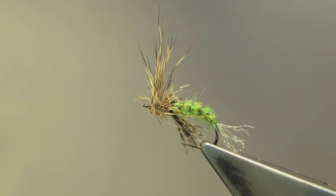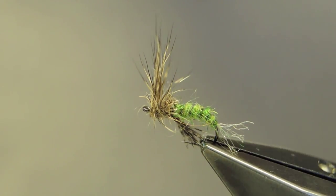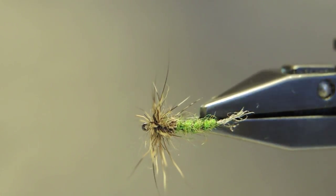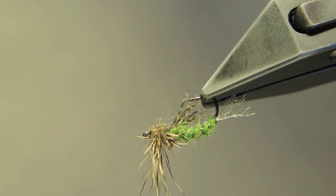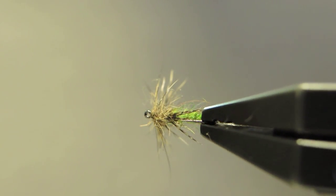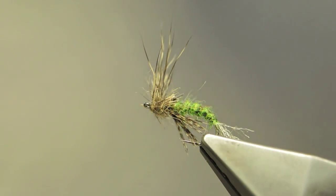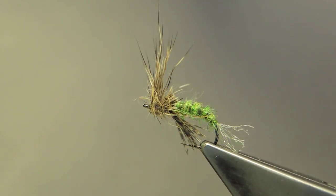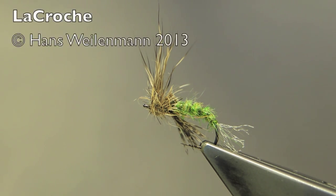This completes the LaRoche, a caddis emerger pattern that is especially effective with caddis emergence into dusk and darkness. The upright wing keeps it visible even under low light conditions.